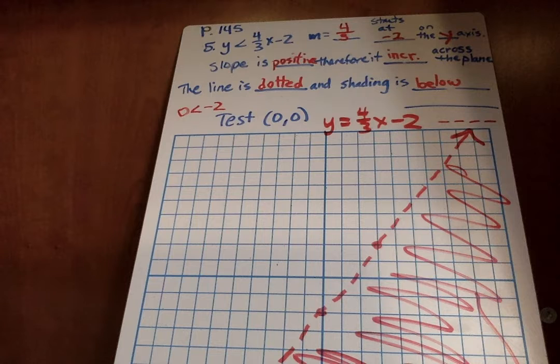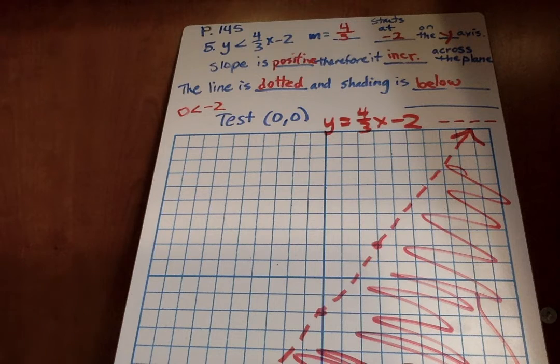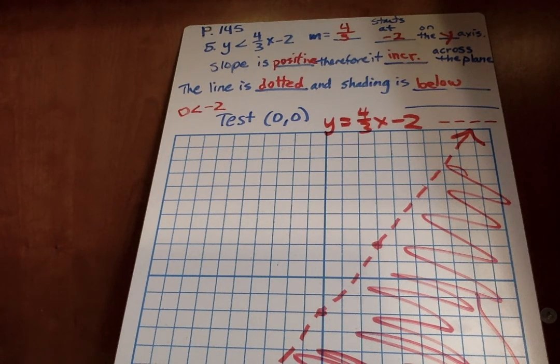I think the only other trickster one is maybe 7 and 8, where you have Y is greater than without an X. And X is less than without a Y. And I may help you in class with that one. And maybe not. All right. You can do the rest, students. You rock.